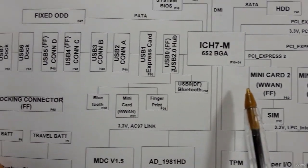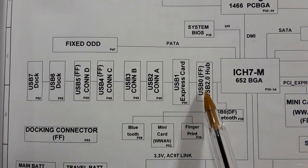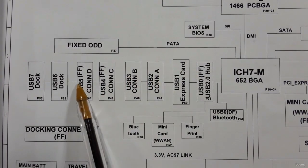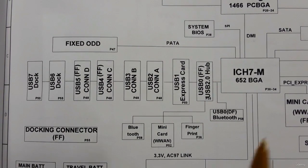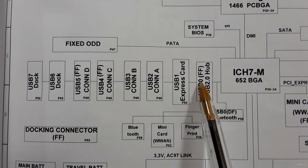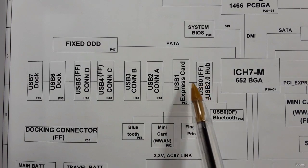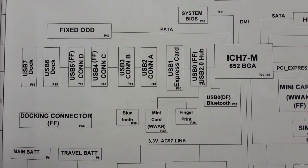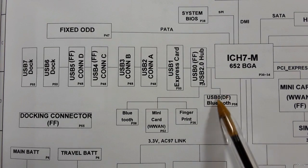The ICH is also connected to USB ports: USB 0 through USB 7, giving this motherboard 8 USB ports in total. This is quite a large motherboard.